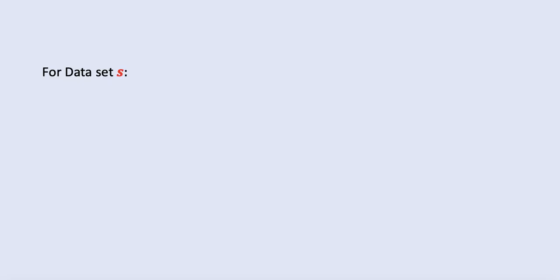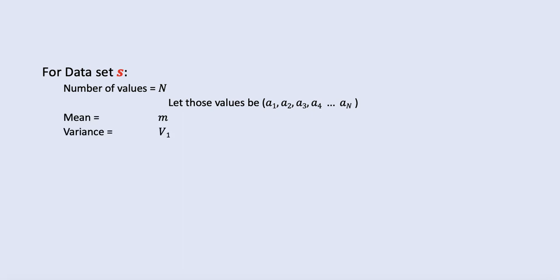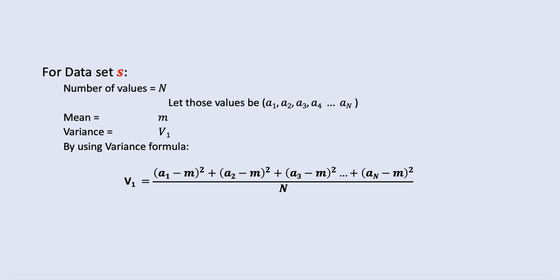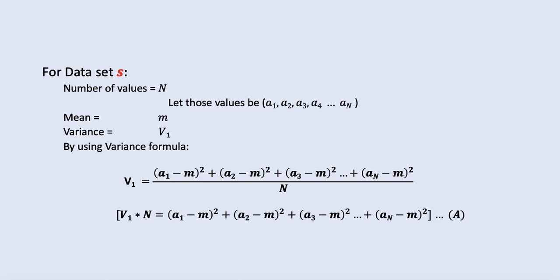In data set s, the number of values are n. Let's call those a1, a2, a3, a4 up to an. Mean is equal to m, variance is equal to v1. If I use the variance formula and simplify further, I can cross-multiply n on the left side, so this becomes v1 times n equals the right hand side — which is the sum of squared differences from the mean. Let's call this equation A.